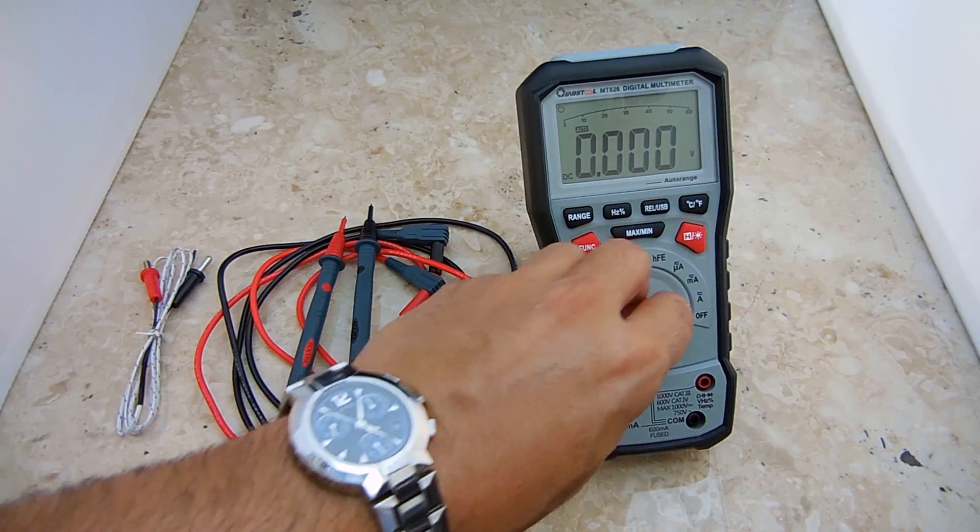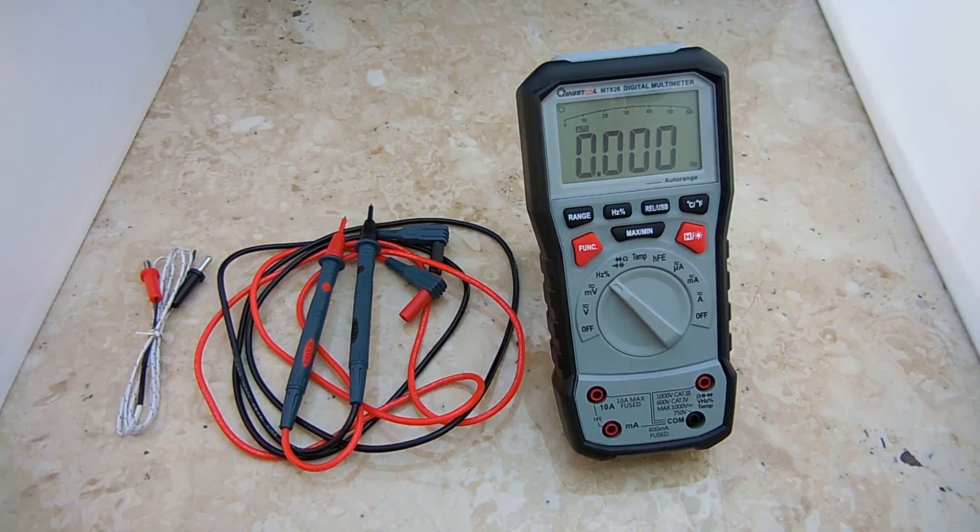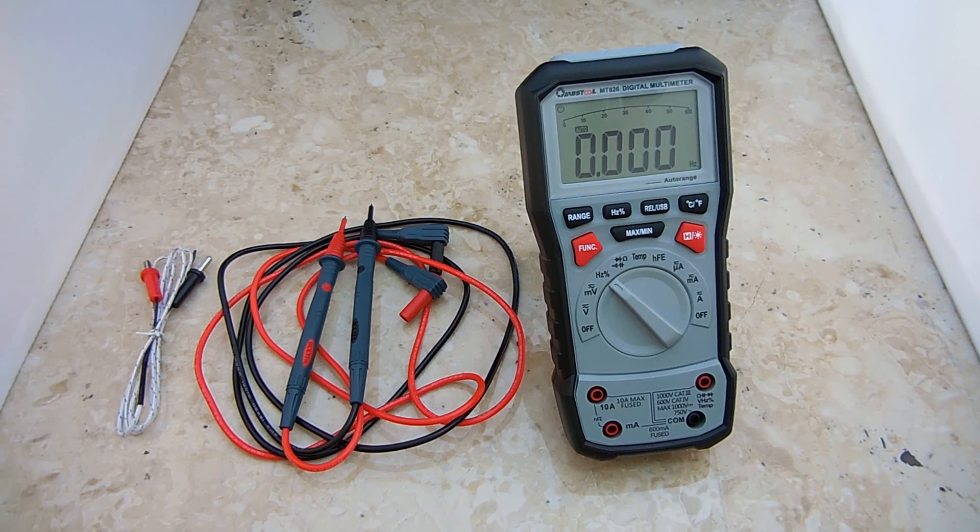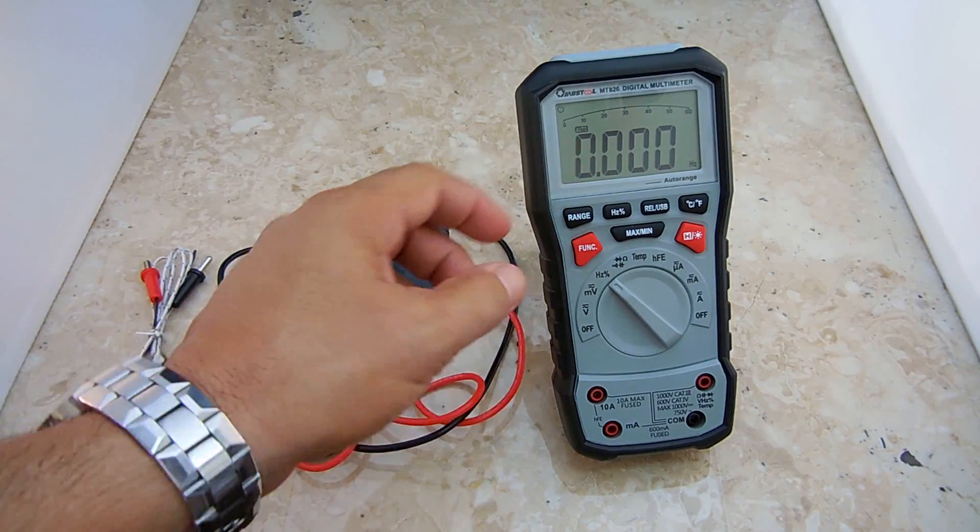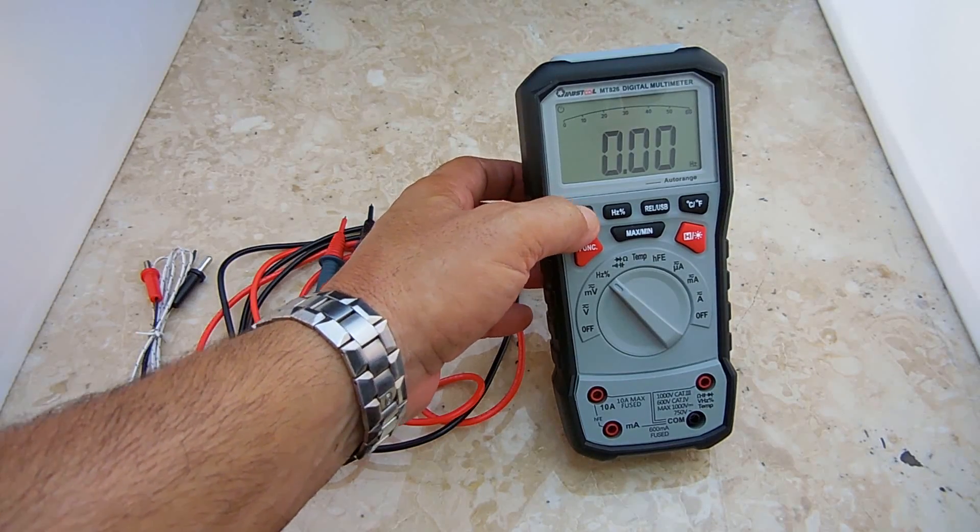This unit also has a frequency setting. Using the frequency range, you're able to measure up to 10 megahertz, as well as obtain a measurement on duty cycle. You can leave it on auto or you could go manually by pushing this button.